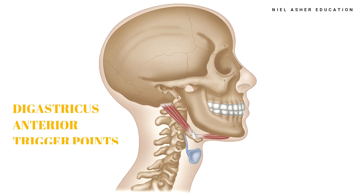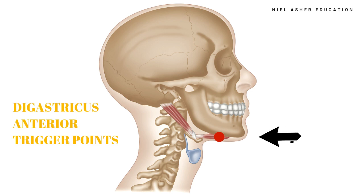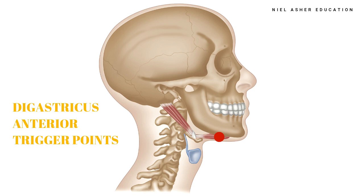The anterior belly of the digastric causes pain that may be perplexing to clinicians and dental professionals because the pain is referred to the lower fore incisor teeth. In this case, if only the teeth are considered to be the pain generator, overlooked myofascial trigger points may go unrecognised and the patient's pain complaint unresolved. Other general symptoms include throat pain, headache, renal tubular acidosis, and vocal singing problems.